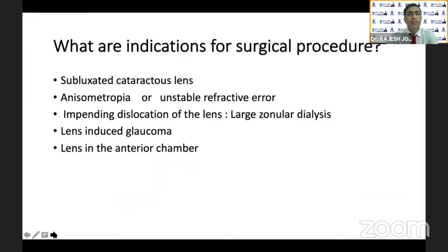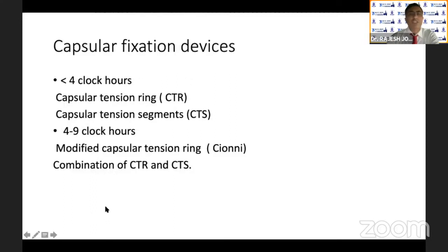Before we go on to the surgical pearls, let us see the indications for surgical procedure: subluxated cataract causing gross refractive error, impending subluxation with large zonular dehiscence where the lens is going to fall into the vitreous cavity or come into the anterior chamber, lens-induced glaucoma, and lens in the anterior chamber. Various fixation devices are available and must be chosen based on the clock hours of subluxation.